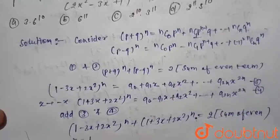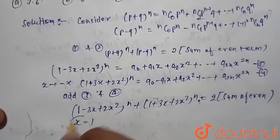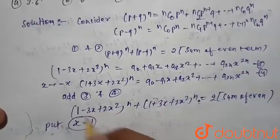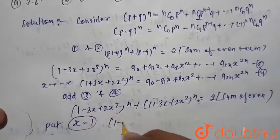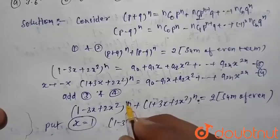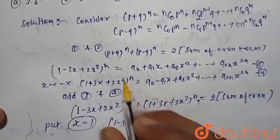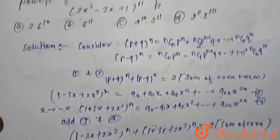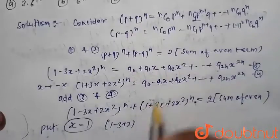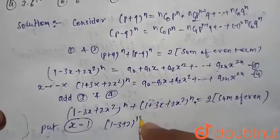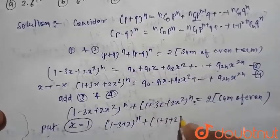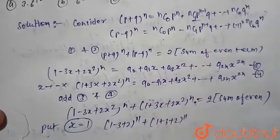Put x = 1. We obtain: (1 − 3 + 2)^n, where n = 11 from the question. So we get: (0)^11 + (1 + 3 + 2)^11 = 6^11.